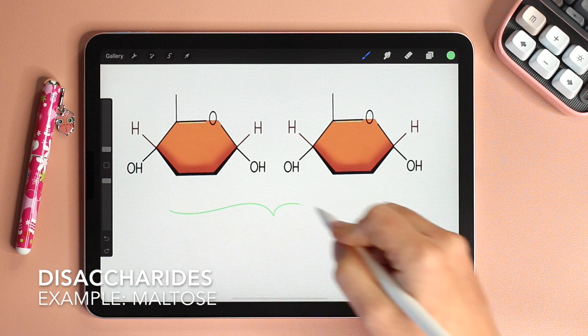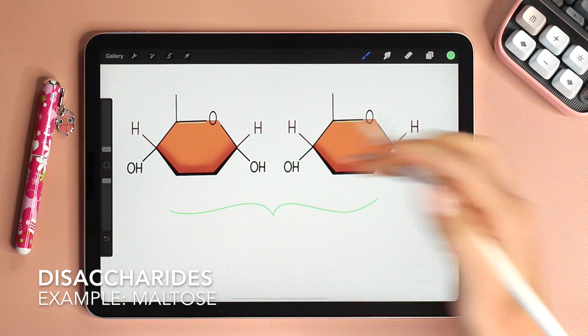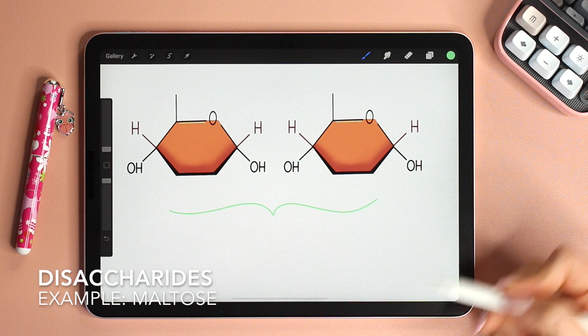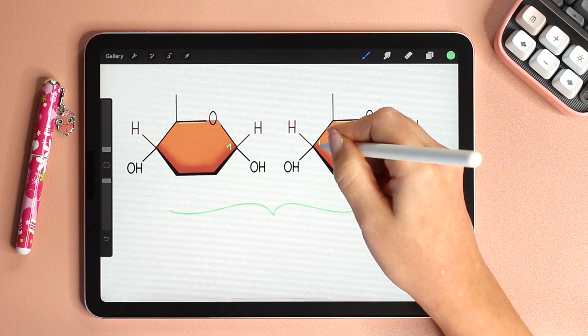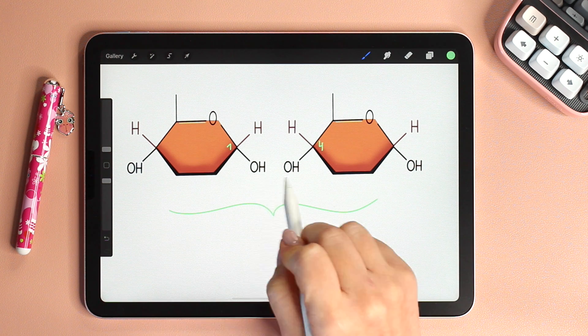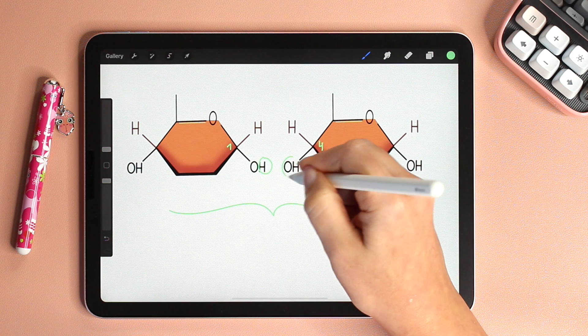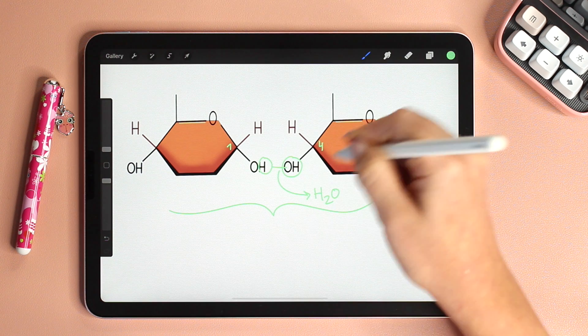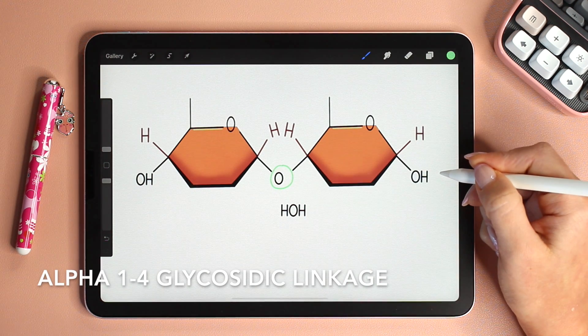To form a disaccharide meaning sugar made of two units we need two monomers. If two alpha glucose molecules condense they will form maltose. Carbon number 1 is facing carbon number 4 of another glucose molecule and this faces the two hydroxyl groups towards each other. The hydrogen and the hydroxyl group will condense with one another forming water, linking the two sugars together and the bond is called glycosidic linkage.